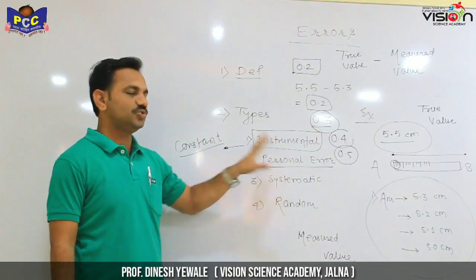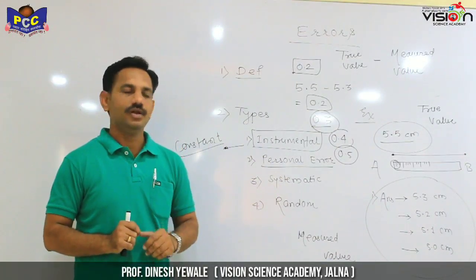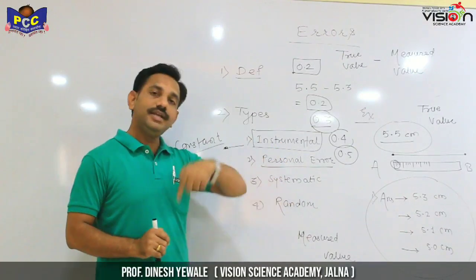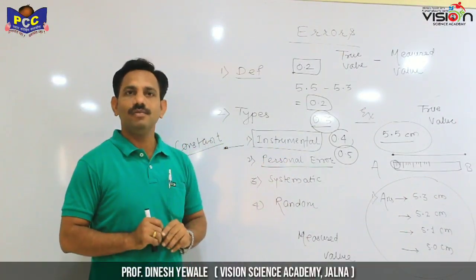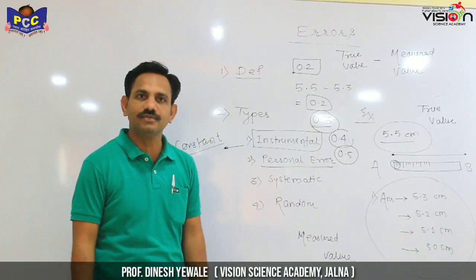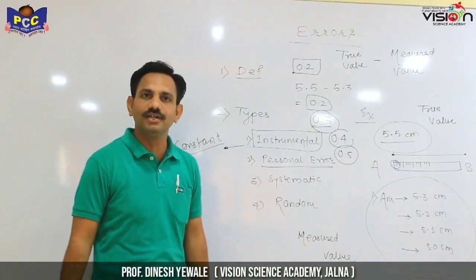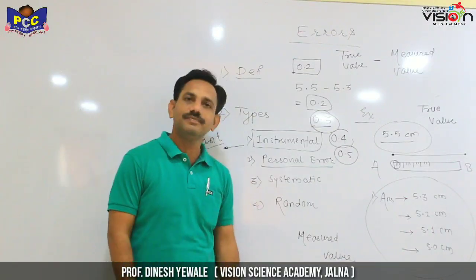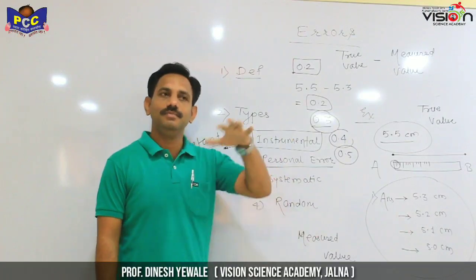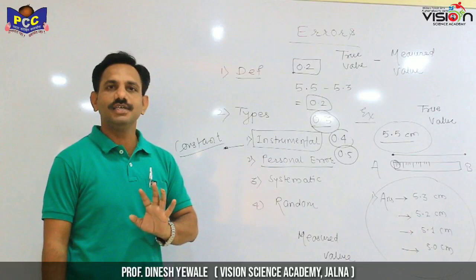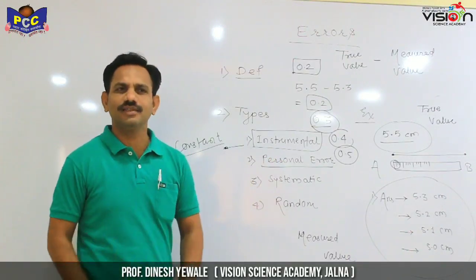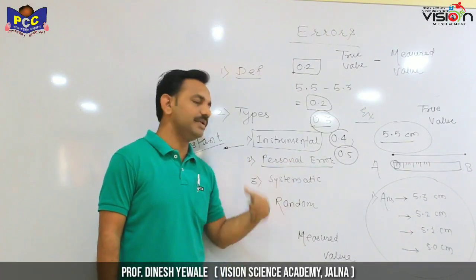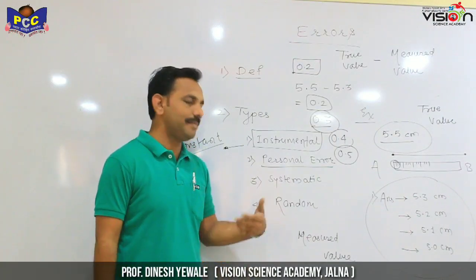What is the reason for personal error? It is from person to person. If the instrument is correct and the point is fixed, there are still problems in reading. For example, if you are a student and you have a device, if you have a mark on the read, there will be a problem. When you have a personal error, you can minimize the error.